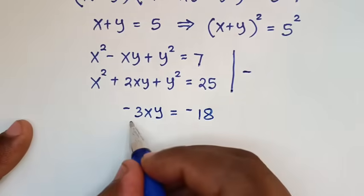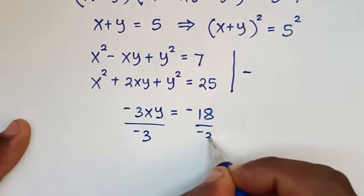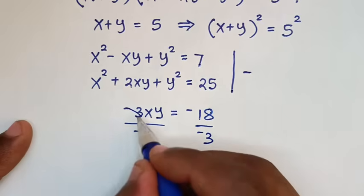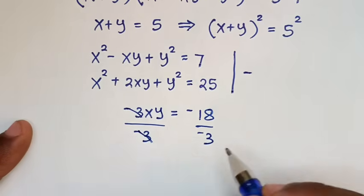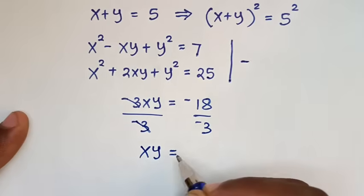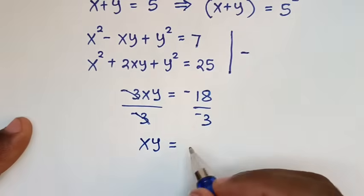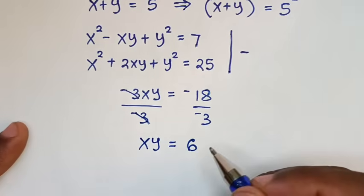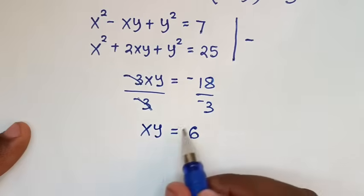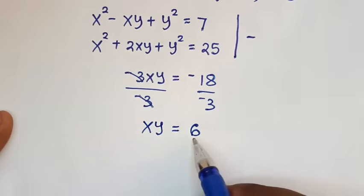Then we divide by negative 3 on both sides — this will cancel — so xy is equal to negative 18 divided by negative 3, it is positive 6. Now this is a natural number, so we will continue to solve this solution.